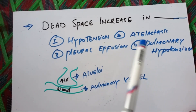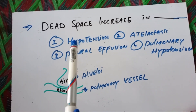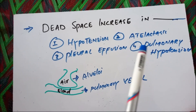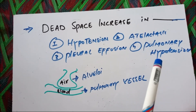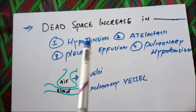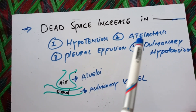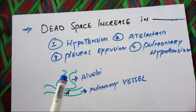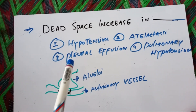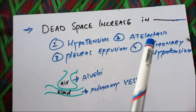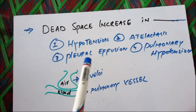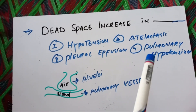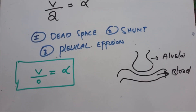Dead space increases in pulmonary hypotension. If pulmonary hypotension is not an option, then pick systemic hypotension, because pulmonary pressure may still be normal. In atelectasis, the lung collapses so the amount of air coming to the alveoli is less, meaning dead space is decreased. Similarly, in pleural effusion there is lung collapse from outside, so dead space is again decreased.